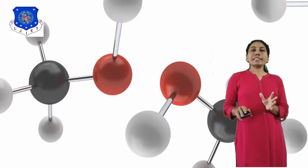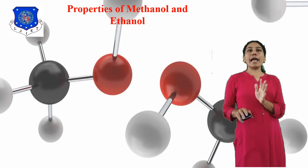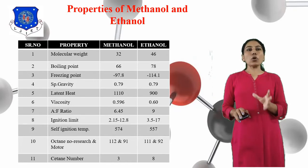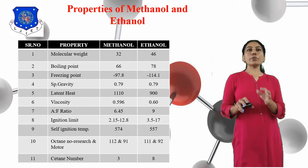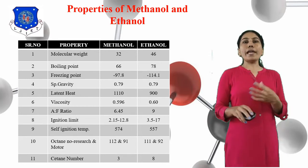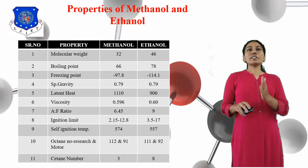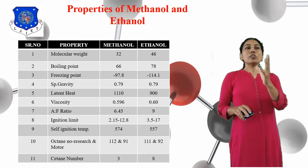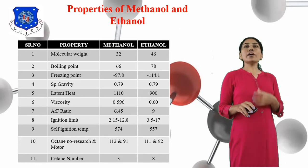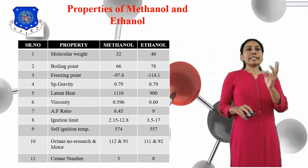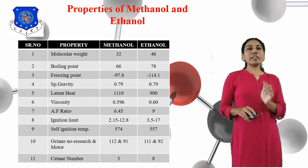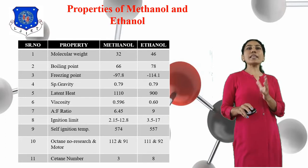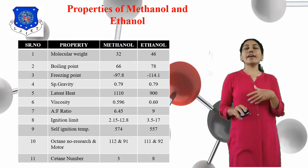Next are the various properties of Methanol and Ethanol. You can see the table. First is molecular weight — the weight of the sum of atoms. The formula of Methanol is CH3OH and Ethanol is CH3CH2OH. The molecular weight of Methanol is 32 and Ethanol is 46. The boiling point of Methanol is 66°C and Ethanol is 78°C.